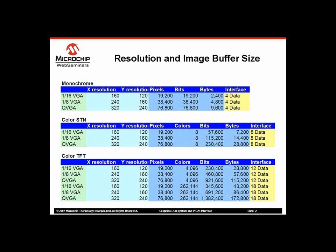In case of 16-bit data, the common trend is to use 5 bits to represent red, 5 for blue, and 6 for green.